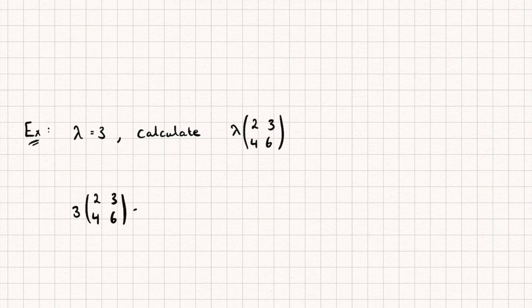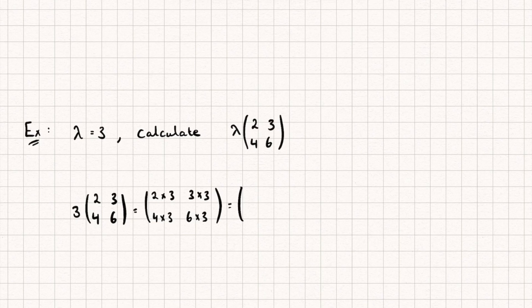To calculate this, all we need to do is multiply the scalar by every single element inside our matrix. So we are going to do 2 multiplied by 3, 3 multiplied by 3, 4 multiplied by 3, and 6 multiplied by 3. This is going to result in a 2 by 2 matrix which is going to be 6, 9, 12, and 18. Multiplying by a scalar is very very simple.